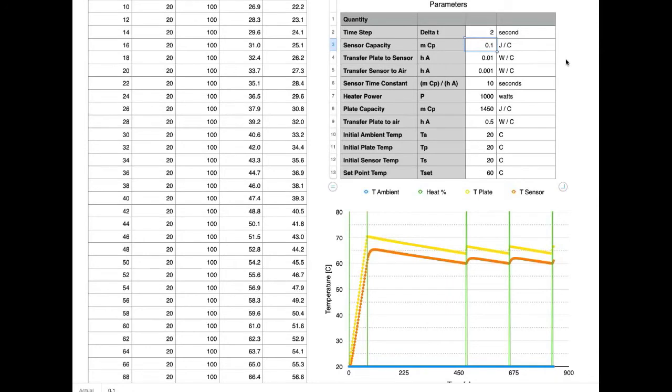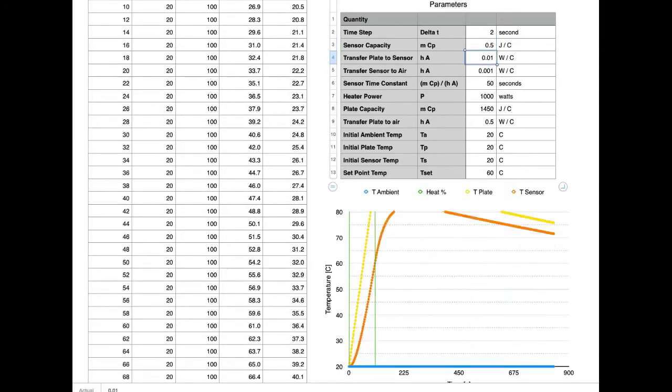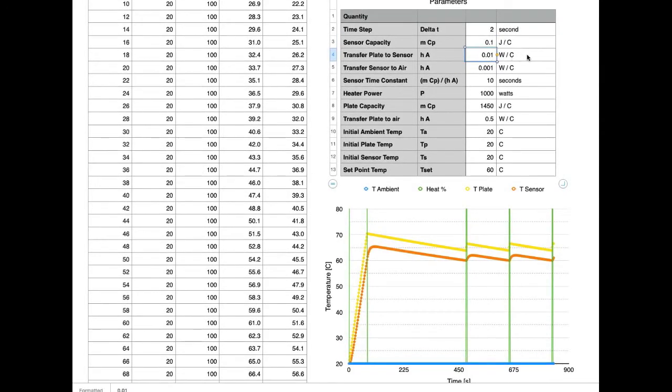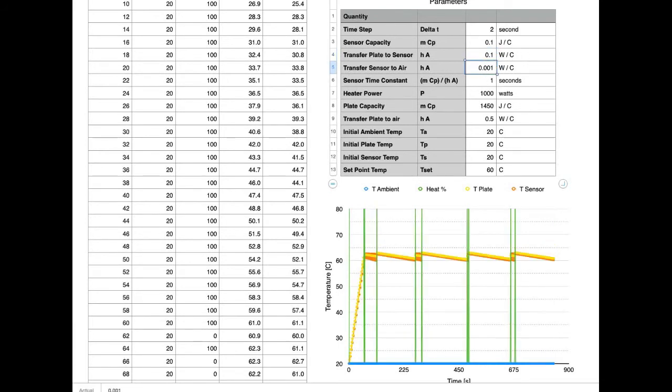So if the sensor was heavier, say 0.5 instead of 0.1, it would respond much more slowly and things go off the graph. If I switch that back to 0.1 and make the transfer from the plate to the sensor much more effective, then I see that the sensor temperature follows the plate temperature much more closely. They're much closer together.